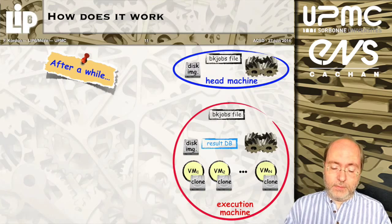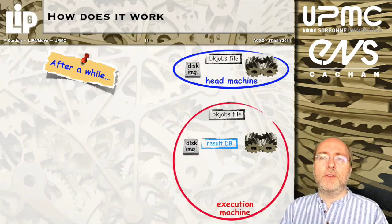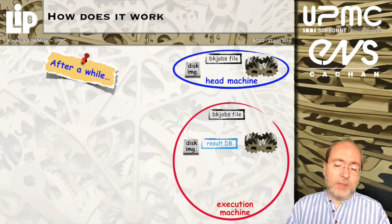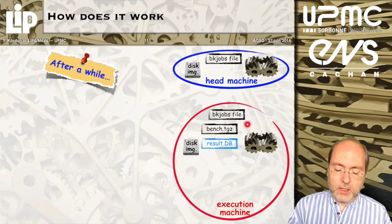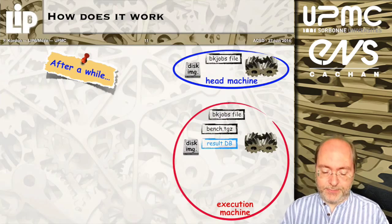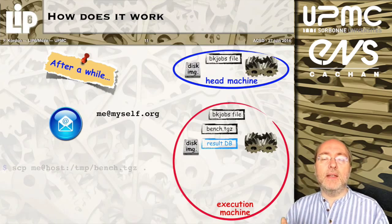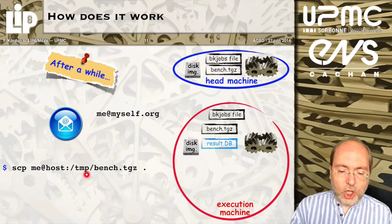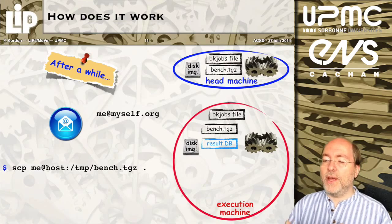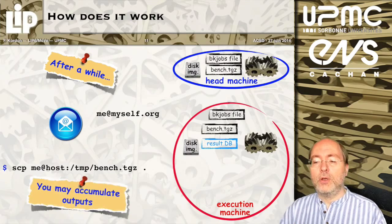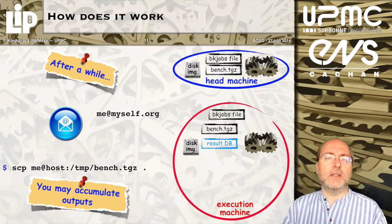After a while, there are not enough remaining jobs to be processed, and one by one the virtual machines finish. They are not replaced because there is nothing else to execute. Once they are all done, BenchKit makes an archive from the content of the database, then sends an email. This email contains a command that allows you to retrieve all the data. On the head machine, you can accumulate numerous executions and slice your benchmark if you want.